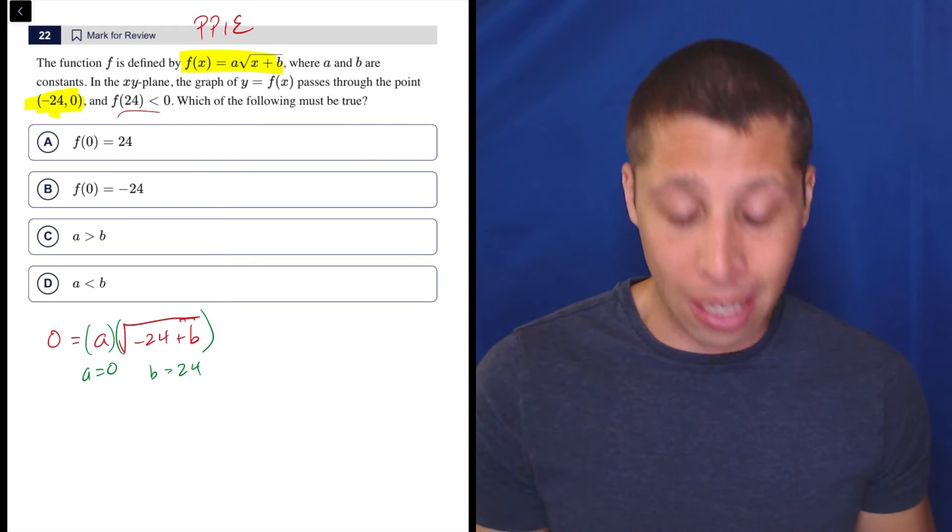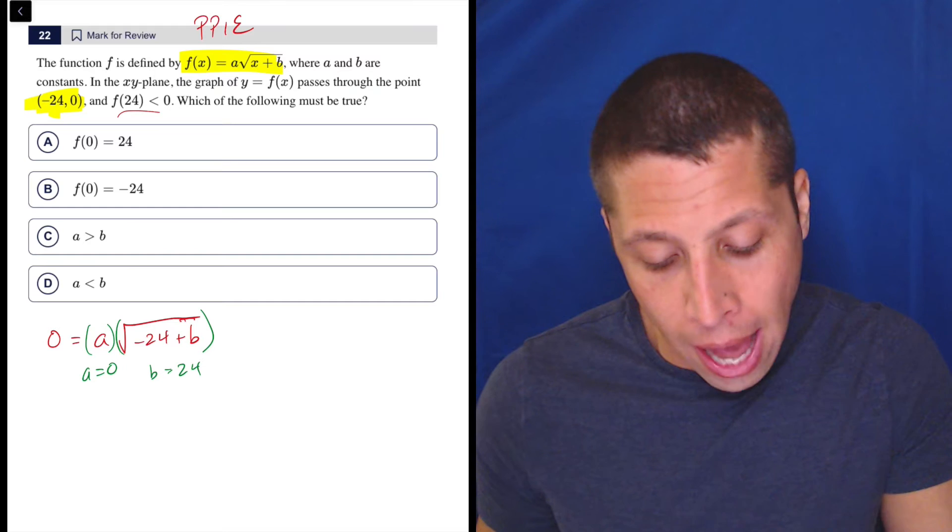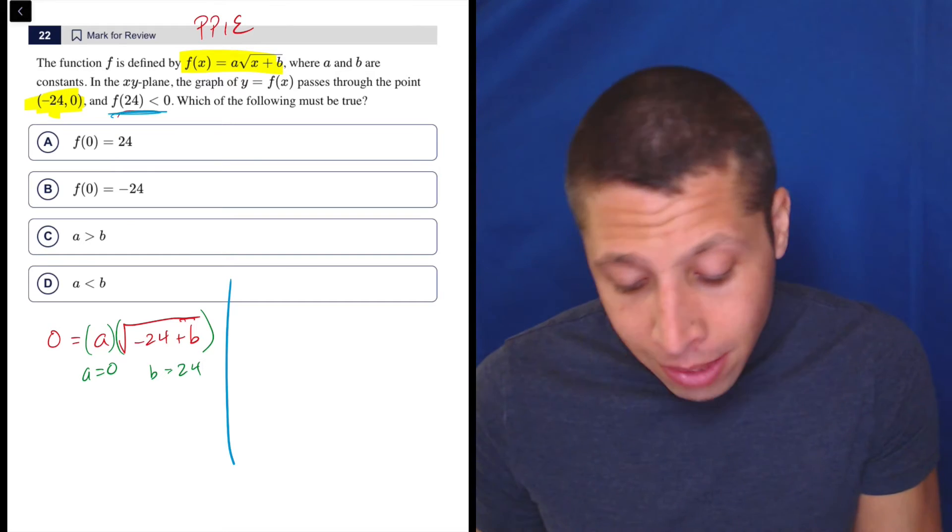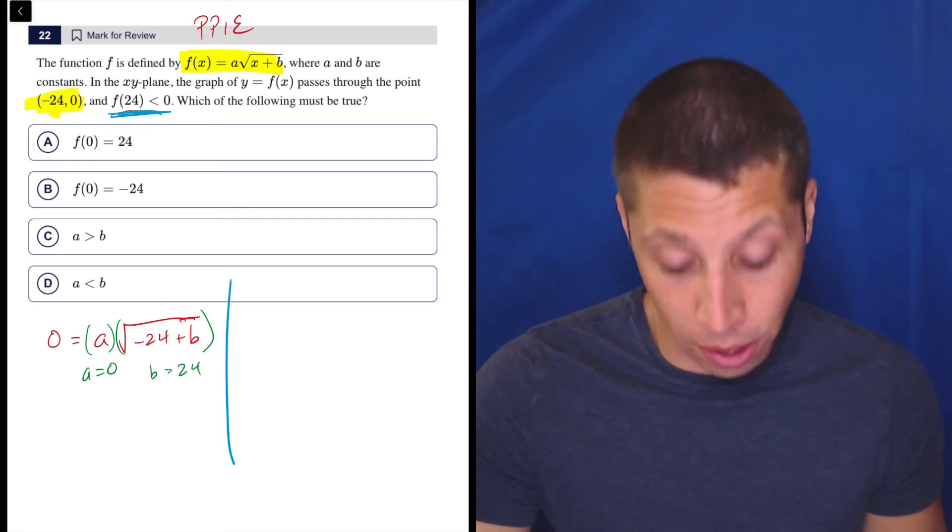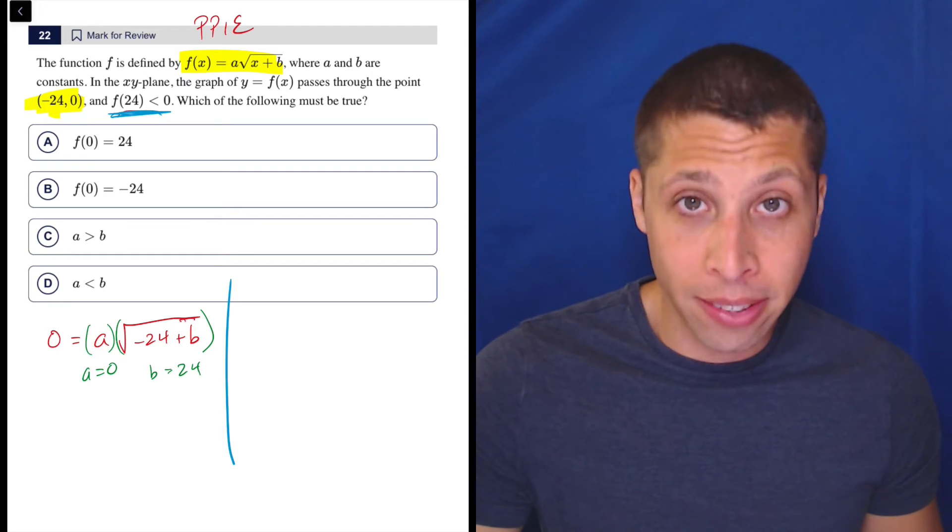I could go to Desmos and start playing with this. But I could also recognize that I have another point. It's not a complete point, but it's something. F of 24 means I've got X is 24. And then that's got to be less than 0.